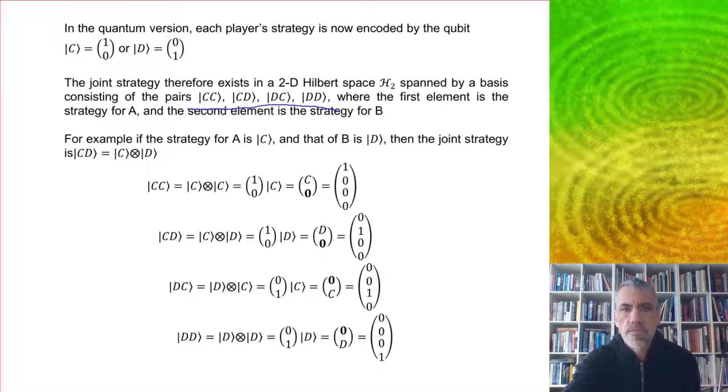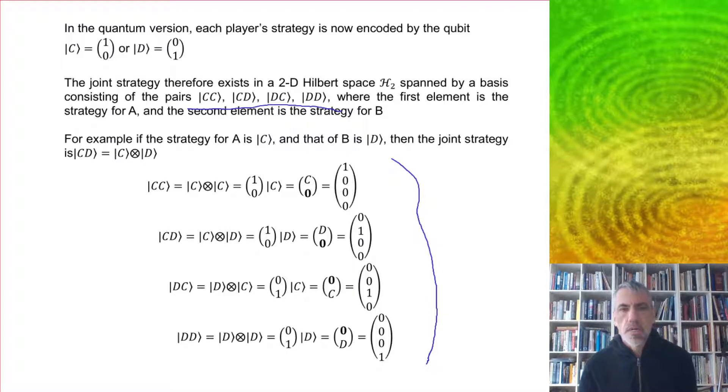For example, if the strategy for A is C and that of B is D, then the joint strategy can be denoted CD, which is a tensor product. Here they all are - this is just the computational basis for this game.